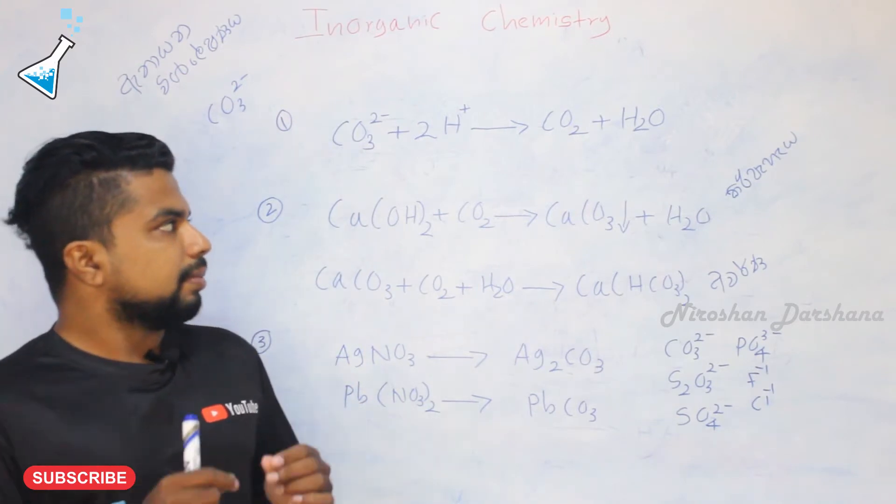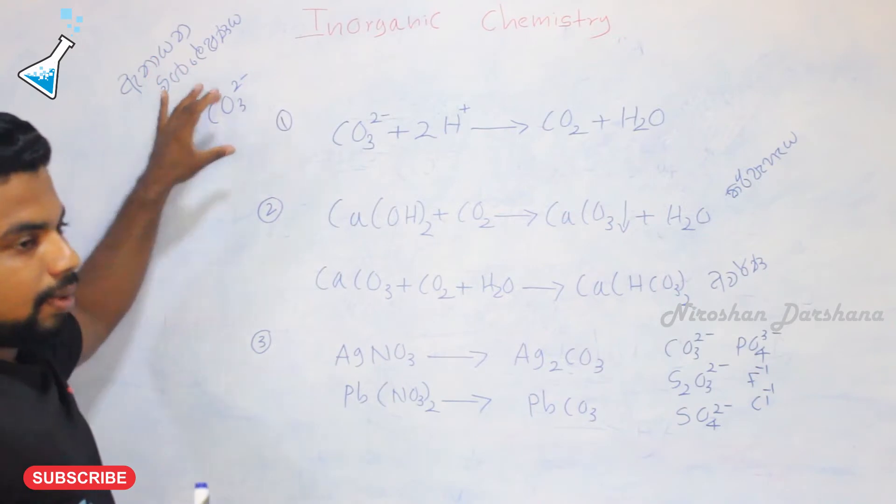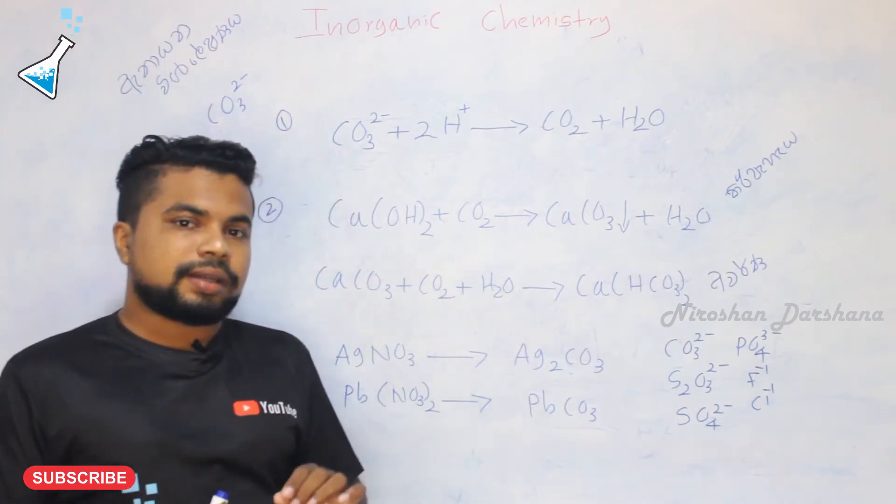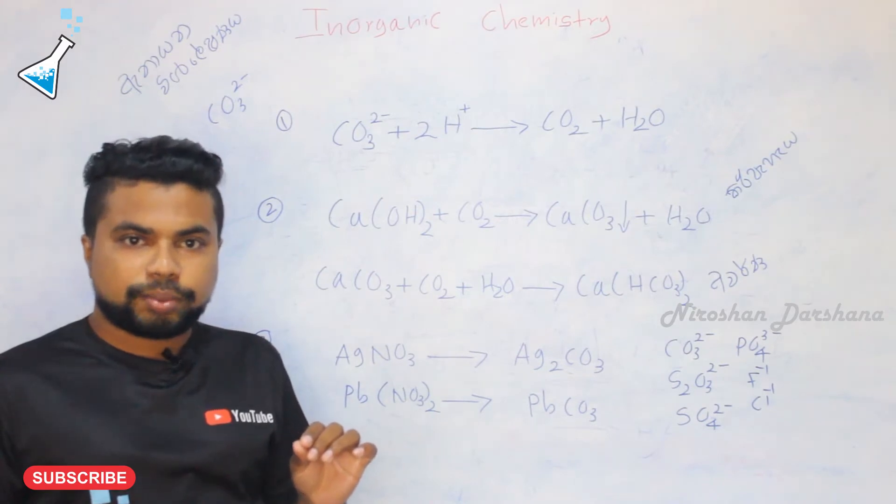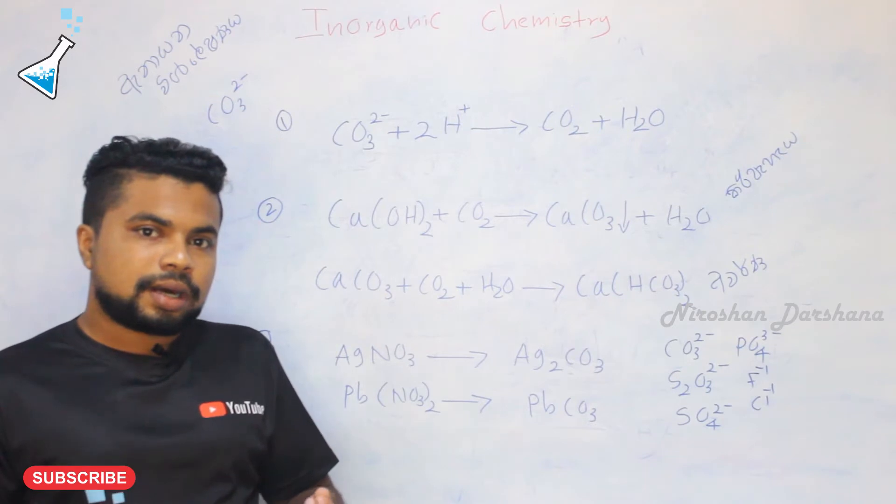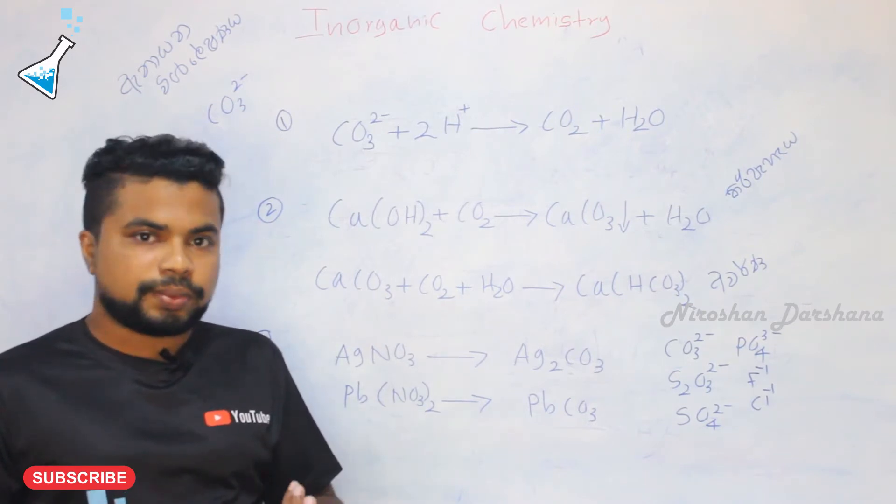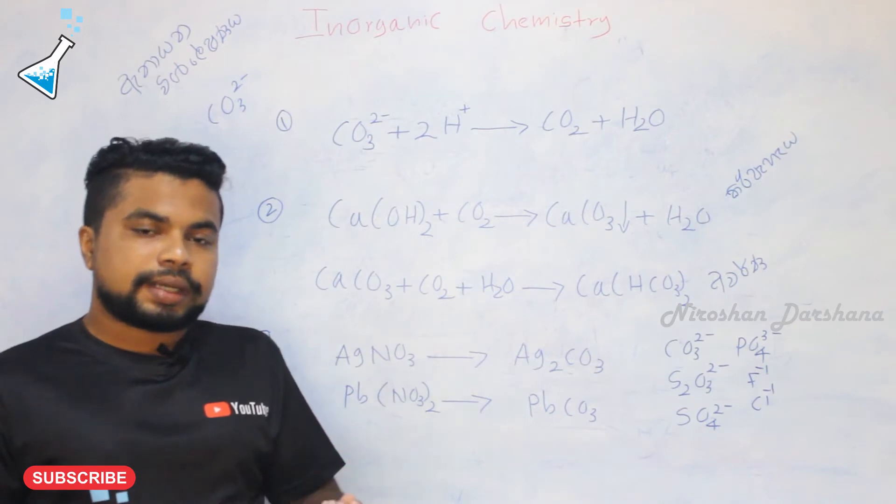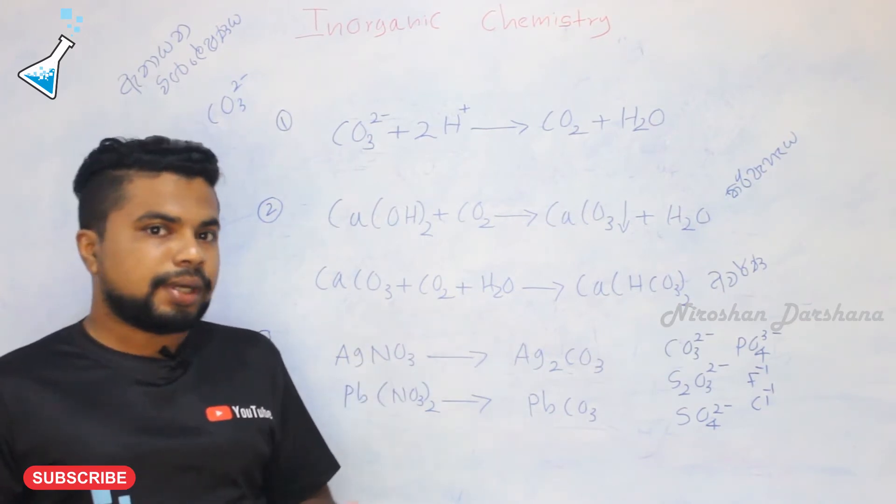The first anion we'll discuss is carbonate. For anion visualization, we need clear methods to identify them. When we perform an experiment, we can make sure the anion is present by observing characteristic reactions.